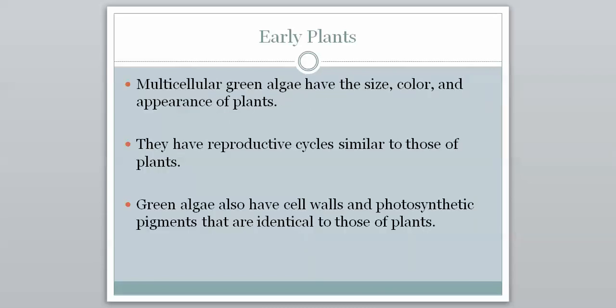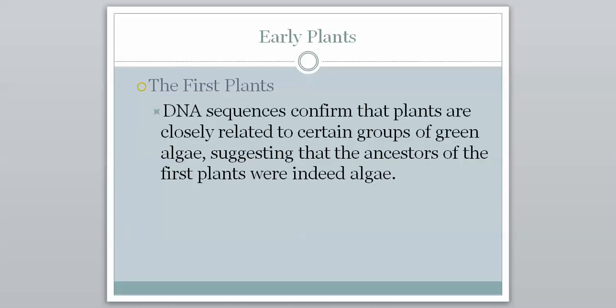The multicellular green algae have the size, color, and appearance of plants. They have reproductive cycles similar to those of plants, and they also have cell walls and photosynthetic pigments that are identical to those of plants. These are key characteristics showing a common ancestor and shared origins. DNA sequences we have today confirm that plants are closely related to certain groups of green algae, suggesting that the ancestors of the first plants were indeed algae. This connects to all of our tools for classification — not just appearance, but also DNA.